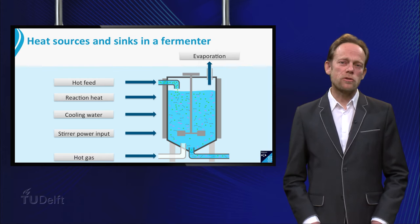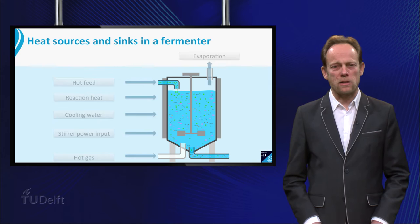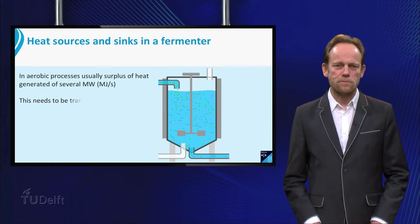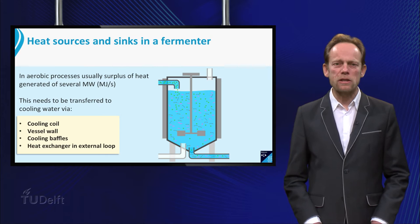An important sink of heat is the evaporation of water, which can have an extra cooling effect. The resulting heat generated in the fermenter needs to be removed to attain a constant temperature in the medium. This can be done in many different ways — for example via coils, the vessel wall, baffles, or via an external loop with a heat exchanger through which the heat is transferred to cooling water.